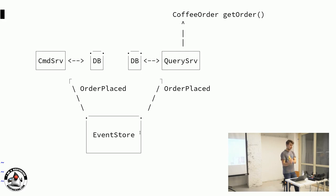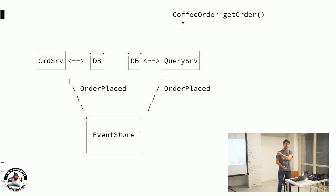Once the event is in the system — it's a fact — asynchronously both the command service and query service consume that event and update their internal representations, whether a database, in-memory storage, or NoSQL. When the client comes back and wants to know the current status of the coffee order, it goes to the query service, which uses its internal representation — just updated from that event — to return the current state.